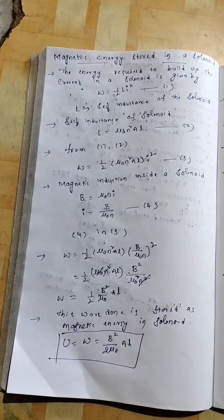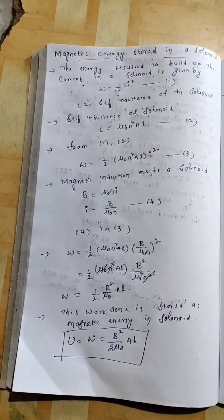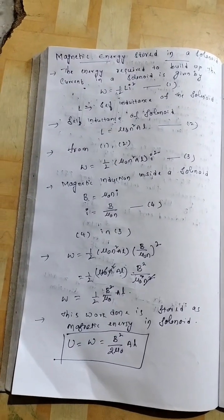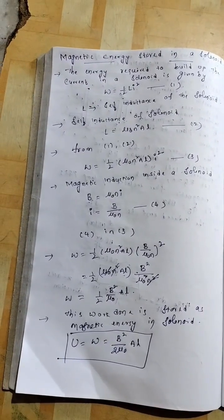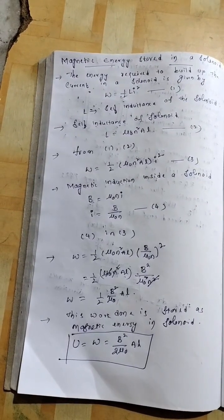Now, the magnetic induction inside the solenoid. The formula is b equal to mu0 n i. From this equation, let us write i equal to b by mu0 n. And put this equation in equation 3.